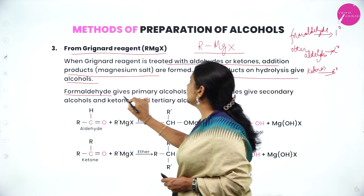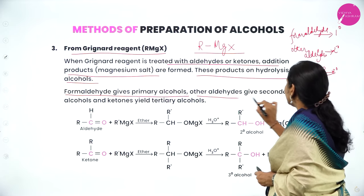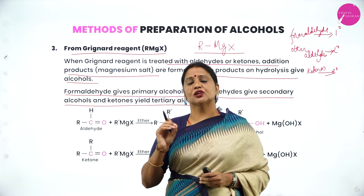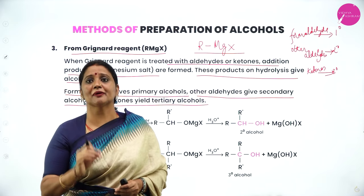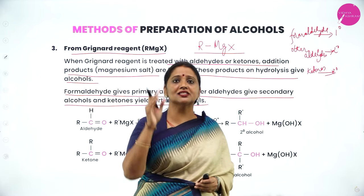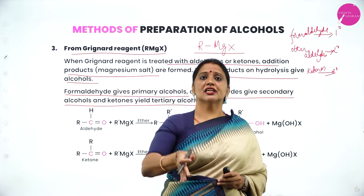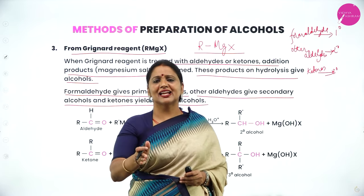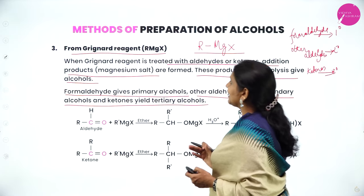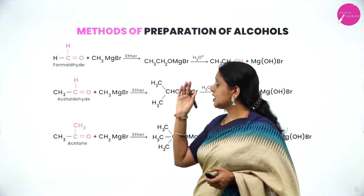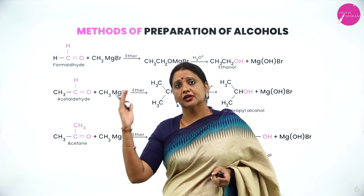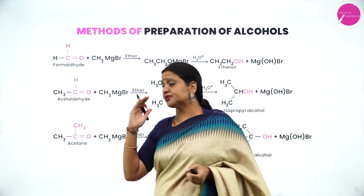To summarize: formaldehyde gives primary alcohol, other aldehydes give secondary alcohol, and ketones give tertiary alcohol. This is the best method of preparation of alcohol because we can prepare all three types — primary, secondary, and tertiary.